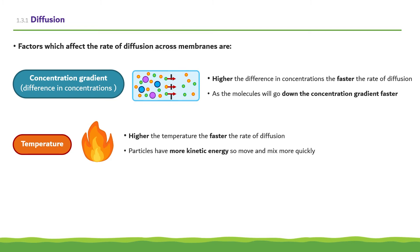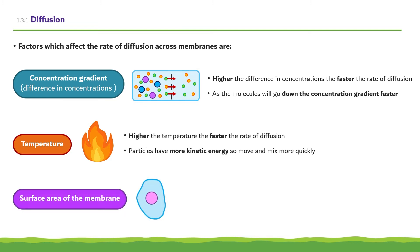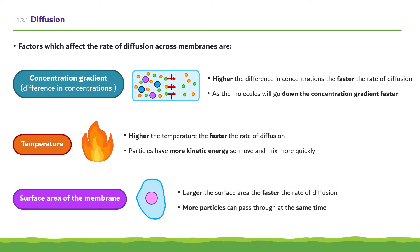The last factor is the surface area of the membrane. The larger the surface area, the faster the rate of diffusion, as it allows more particles to pass through at the same time.